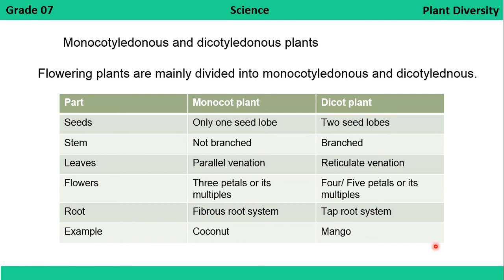Flowering plants are divided into monocotyledonous plants and dicotyledonous plants. Monocot means only one seed lobe is present in the seeds, while dicot means there will be two seed lobes present. A table shows how each part of the plant differs between monocot and dicot plants, with the main difference being in the seed lobe.